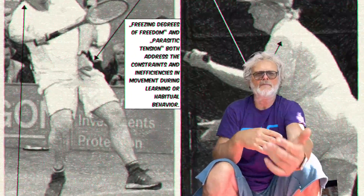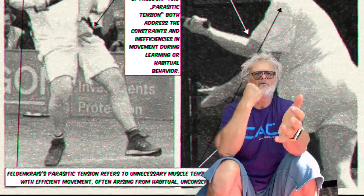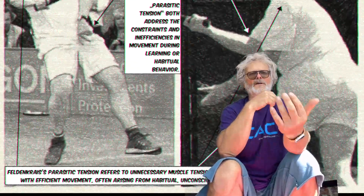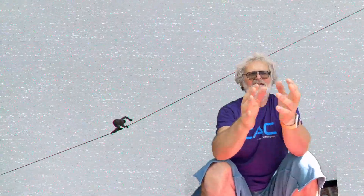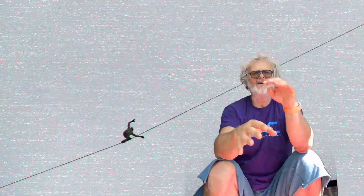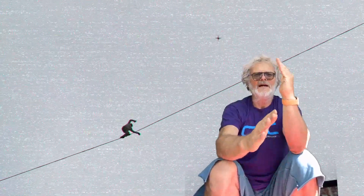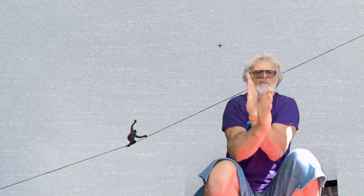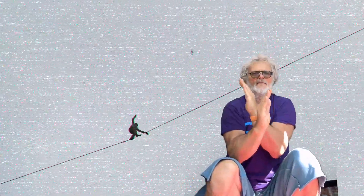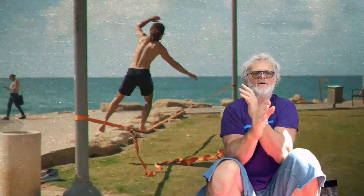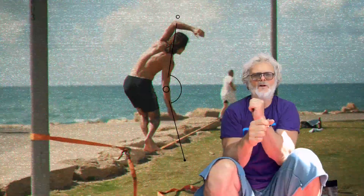Freezing degrees of freedom and parasitic tension simplify or restrict movement, whether temporary during learning or habitually due to poor awareness. Let's consider another example: balancing on the slackline, where athletes might keep their arms stiff and close to their body with only little sway in elbow and wrist.